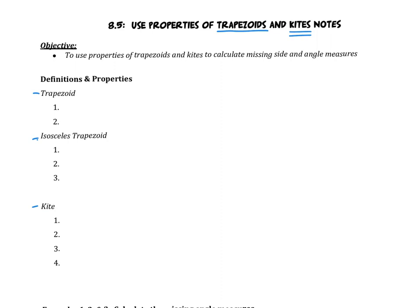A trapezoid has only one pair — that's really important — of parallel sides. Those parallel sides are called the bases. A trapezoid is a completely different figure than a parallelogram. A parallelogram has to have two pairs of parallel sides. A trapezoid has exactly one pair, so a trapezoid does not fall in the parallelogram family.